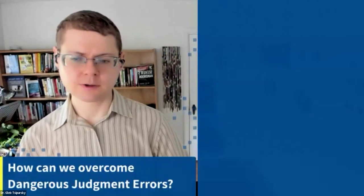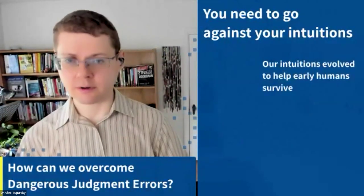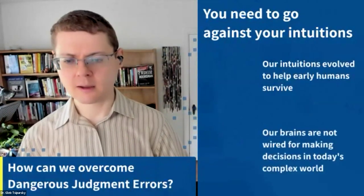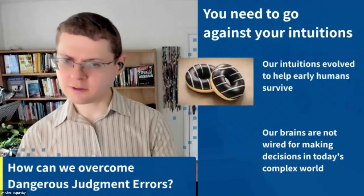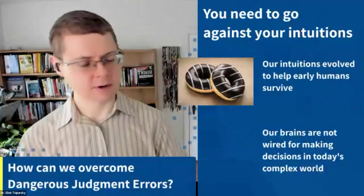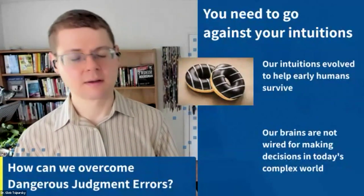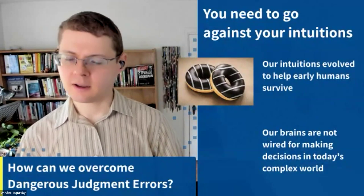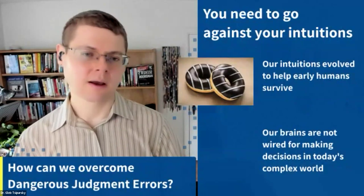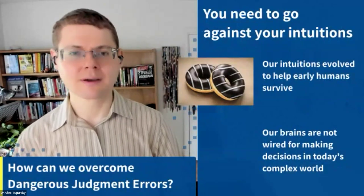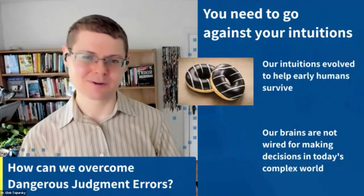How can we overcome dangerous judgment errors? You need to learn to go against your intuitions. Our intuitions work great for helping humans survive, but they're not wired for making good decisions in today's world. For example, if a grateful vendor sends over some donuts to your office and you're passing by those donuts, it's very tempting to take half a donut. And when you take half a donut, you don't want to leave the other half, so you take that too. Then you're triggered and take another donut and another, and before you know it half the box is gone.